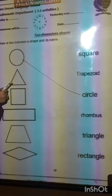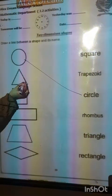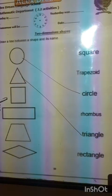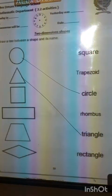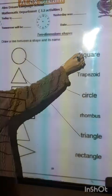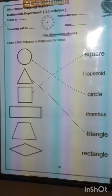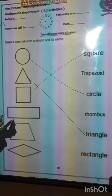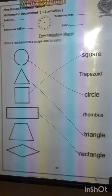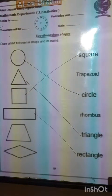The name of this shape is triangle. What's the name of this shape? Square. So draw a line between them. The name of this shape is rectangle. The name of this shape is trapezoid. Good job.